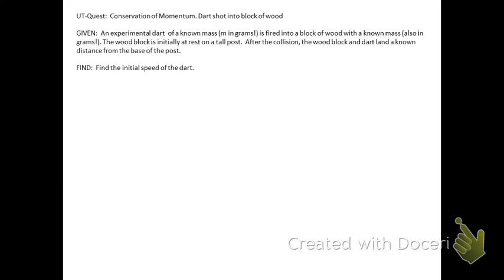This is a pretty good problem. We have to go back to our kinematics and projectile motion in order to solve this problem. Let's take a look at what we're given. An experimental dart of known mass is fired into a block of wood also of known mass. The block of wood is initially at rest after the collision. How do we analyze collisions in our class? With conservation of momentum.